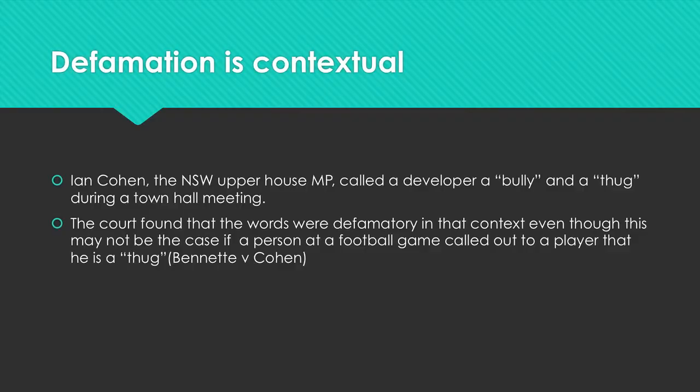What makes people think less of you can and does change over time. For example, to call someone a de facto spouse or a rape victim a hundred years ago was insulting and may have been defamatory, but not now. The meaning ascribed to words and the language we use changes over time. What the court needs to do is consider the context of the insult in determining its impact. Consider the example of Bennett and Cohen: Ian Cohen, a NSW upper house MP, called a developer a bully and a thug during a town hall meeting. The court found that the words were defamatory in that context, even though calling a person a thug at a football game would probably not have been considered defamatory in that very different context.